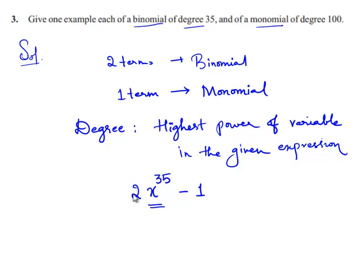This can be considered as an example for the binomial. And the monomial of degree 100 is x^100. The variable is x and the power of the variable is 100. This is an example of a monomial.